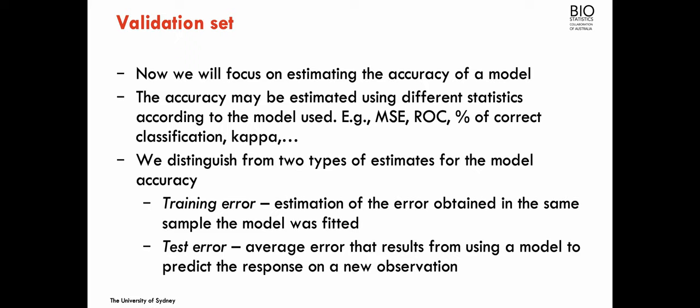The most extreme case is the k-nearest neighbor algorithm, both for classification or regression, with one neighbor — k equals 1. Using k equals 1, we completely overfit the data, so we have zero percent error. The fitting is perfect, but obviously it's not going to generalize to other data.